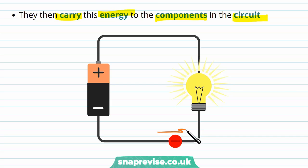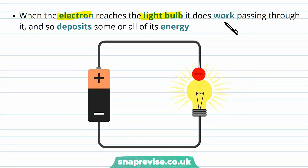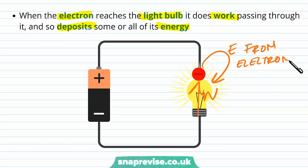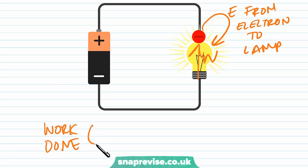The electron moves around the circuit with its packet of energy. When it reaches the light bulb it does work passing through it and deposits some or all of its energy. It is harder for the electron to pass through the light bulb than through the metal wire, so it has to do some work, transferring some or all of its energy to the light bulb. The work done by the electron, W, is equal to the energy loss of the electron.